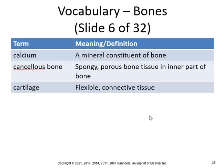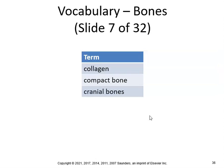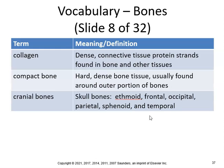Calcium is a mineral constituent of bone. Cancellous bone is spongy, porous bone tissue in the inner part of the bone. Cartilage is flexible connective tissue. Collagen is a dense connective tissue protein found in bone and other tissues. Compact bone is hard, dense bone tissue found around the outer portion. Cranial bones include the ethmoid, frontal, occipital, parietal, sphenoid, and temporal bones.